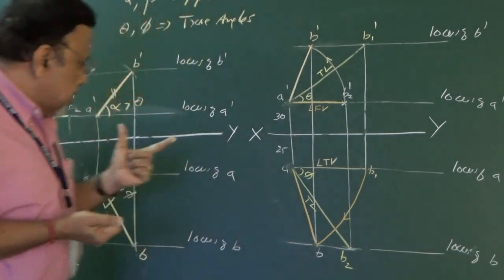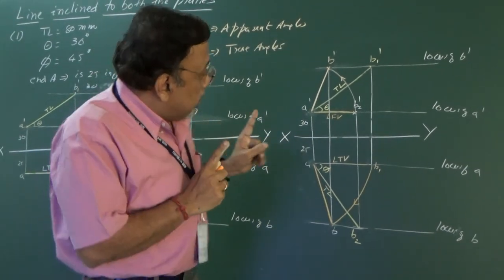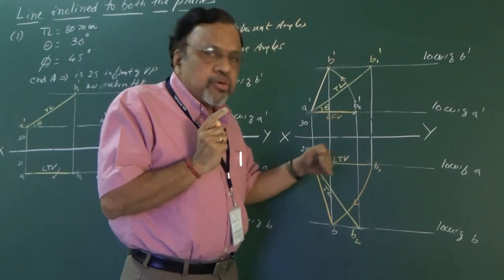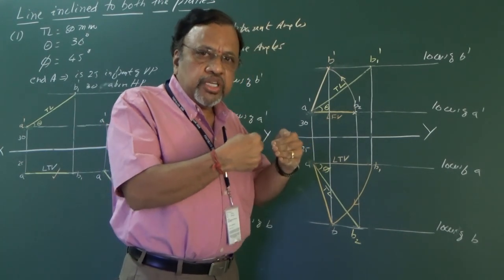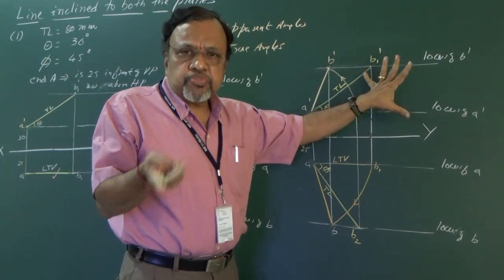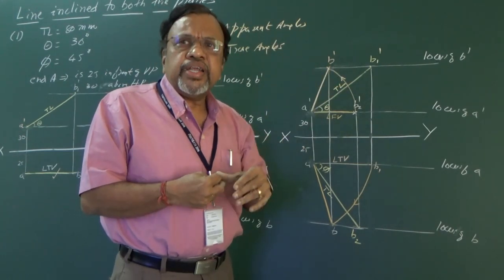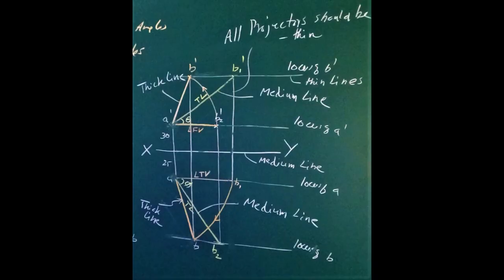As you can see, no need for three stages — everything can be done in a single stage. If you simply look at the figure without following the procedure, you will get confused because so many lines are present. That is why you must follow a sequential procedure, which leads to your solution. In any problem with lines, the data may be given in different varieties, but ultimately you are always determining these six parameters: LTV, LFV, and the locus of both ends in both views. Thank you.